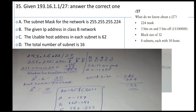128 plus 64 plus 32 equals 224. This means 2 to the power of five gives us the number of host bits. The number of usable hosts is 32 minus 2, which equals 30.